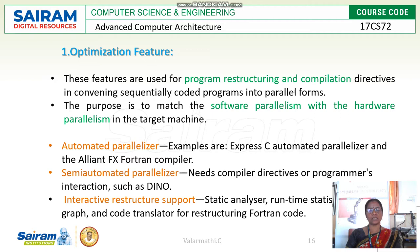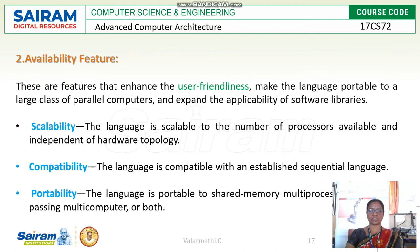The purpose of this feature is to convert software parallelism into hardware parallelism in target machines. Examples of optimization features include automated parallelizers, semi-automatic parallelizers, interactive restructure support, static analyzer, runtime static graph, and code translator for restructuring Fortran code.